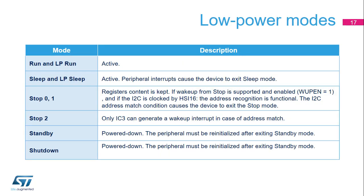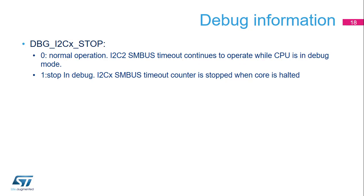In SMBus mode, a PEC error flag is set when the received PEC does not match the calculated PEC register content. A timeout error flag is set when a timeout or extended clock timeout is detected. An alert pin detection flag is set in the SMBus host configuration when alert is enabled and a falling edge is detected on the SMBA pin. The I2C peripheral is active in run and sleep modes. In stop modes, the registers' content is kept. If wake-up from stop is supported and enabled, and if the I2C is clocked by HSI-16, address recognition is functional. For debugging purposes, a bit is available in the MCU debug component that can be used to stop the SMBus timeout counter when the core is halted.